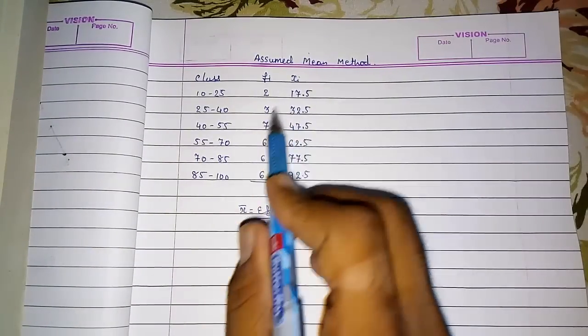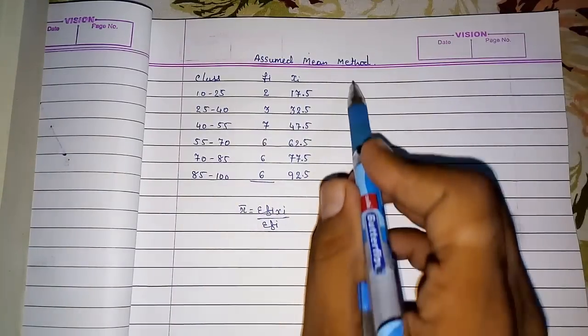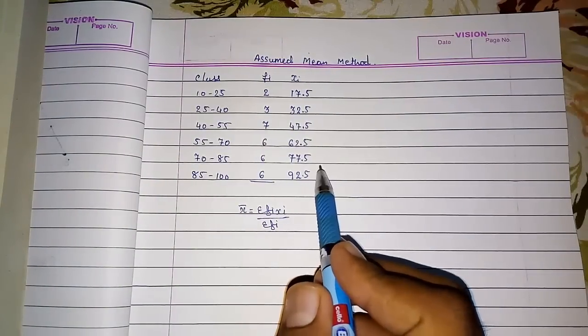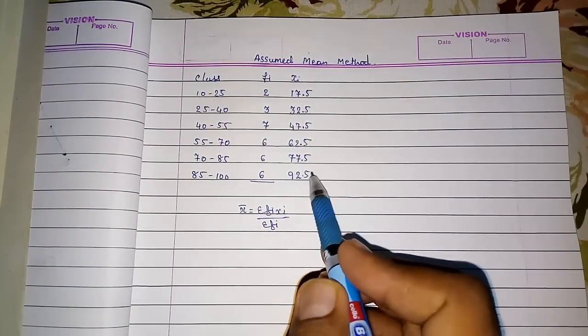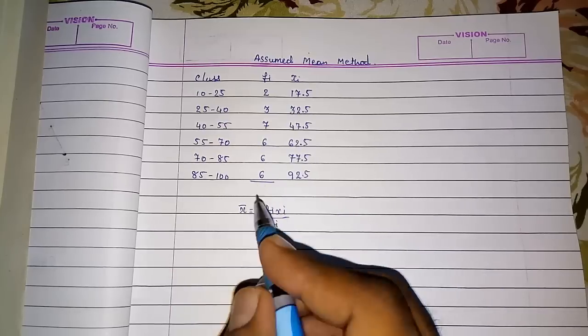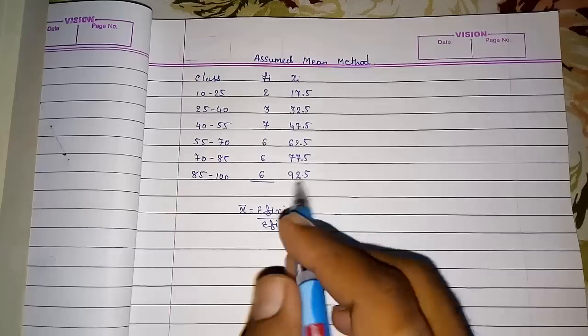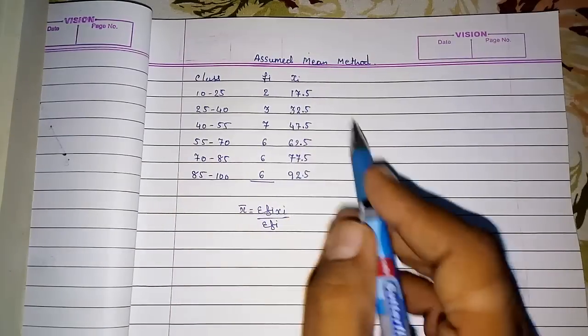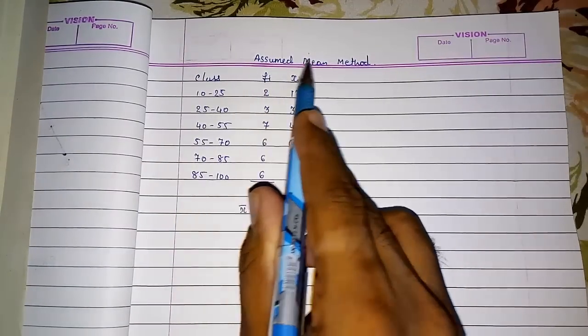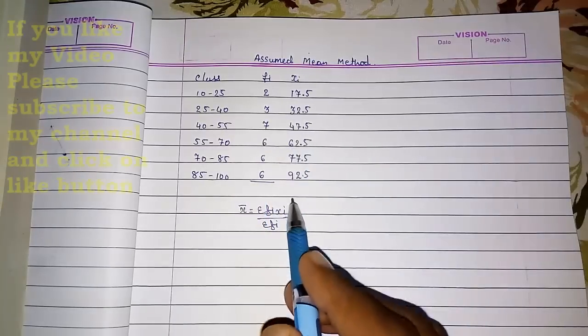Why we are not going to use this? Look here, these numbers are big. If we multiply this, we will get an answer and then we have to add, so it will take time. And when you are solving this in board exam, you have to do it so quickly. So you have to use another method, that is called assumed mean method.